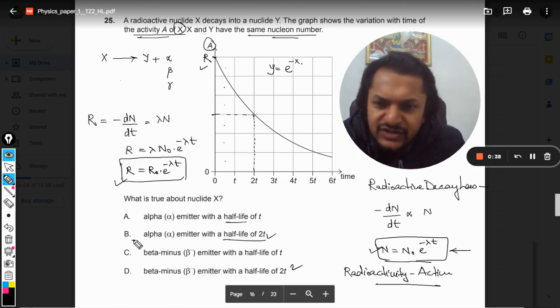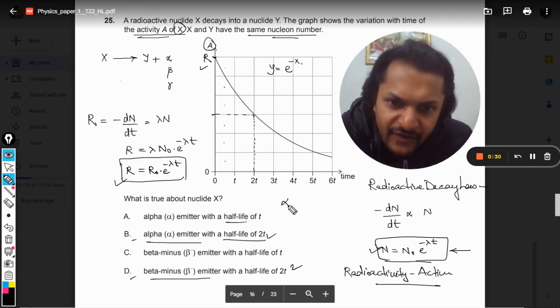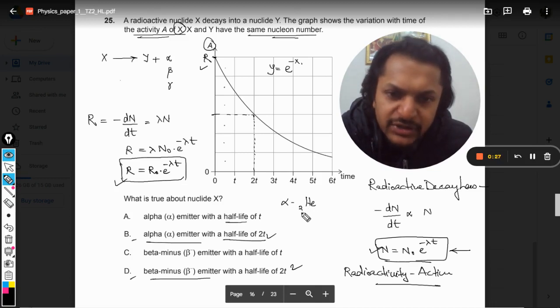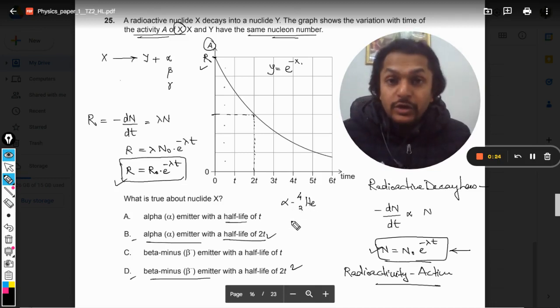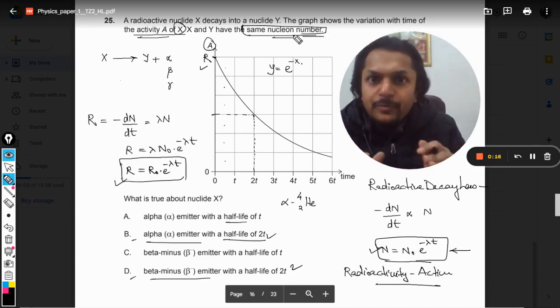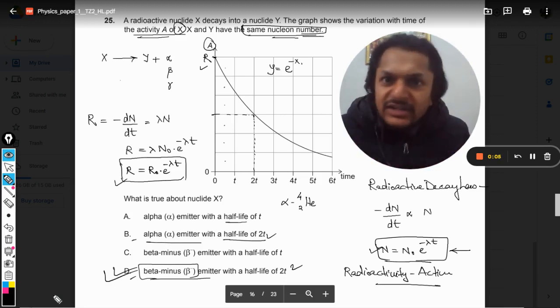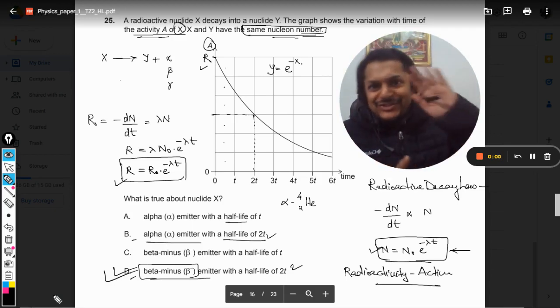One thing is sure: half-life is going to be 2d, so either the answer is B or C. Now will it be an alpha emitter or beta minus? Alpha is helium nuclei, so the atomic number is two and mass number is four. When alpha is emitted, the nucleon number has to be changed, reduced by two. But it is given that it is not reduced, which means we are emitting beta minus. So our answer is D, because when beta is emitted, mass number does not decrease. All the best, bye.